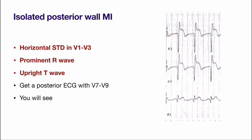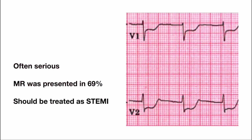What you see in V1 to V3 is actually a vertically flipped image of the posterior wall — it represents true ST elevation in the posterior wall. Don't forget about this pattern, as it is often a serious condition associated with mitral regurgitation in around 70% of cases and should be treated as ST elevation MI. Always remember: ST depression in V1 to V3 may represent isolated posterior wall STEMI.